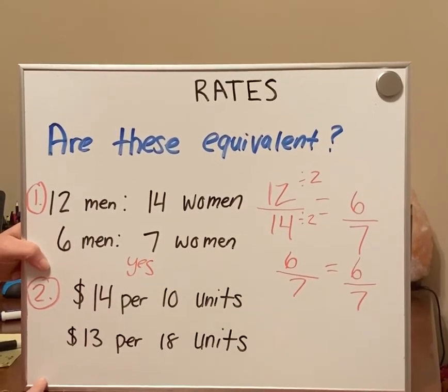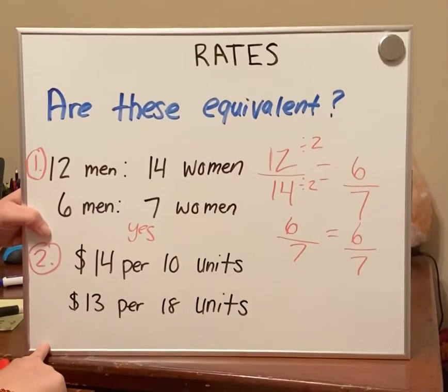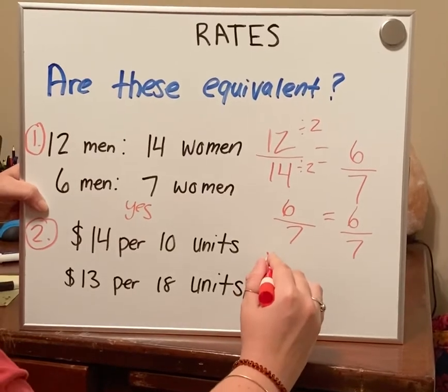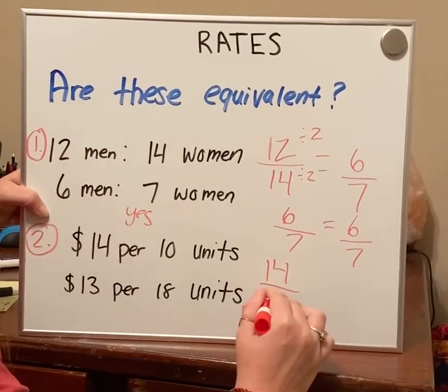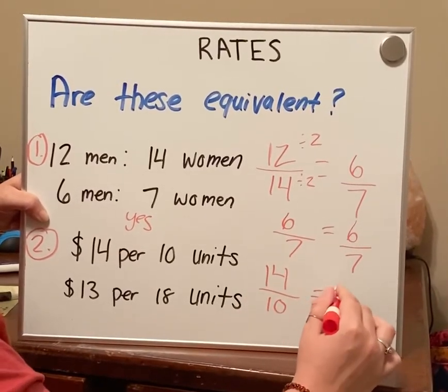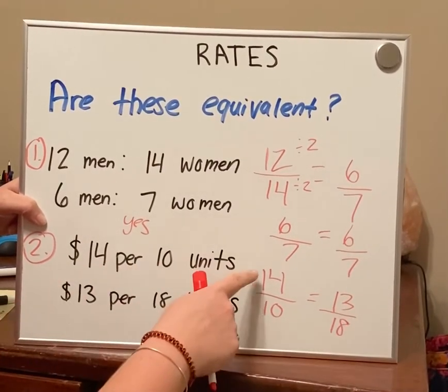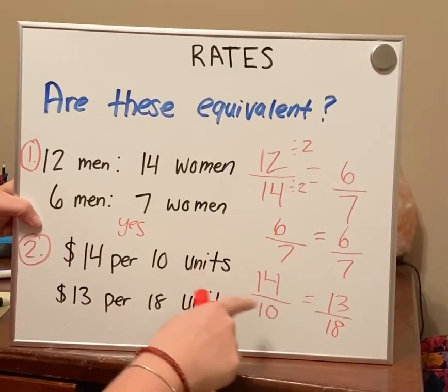The second problem, we have $14 per 10 units and $13 per 18 units. So again, we're going to make a fraction. 14 over 10 equals 13 over 18. We have dollars over units, dollars over units.